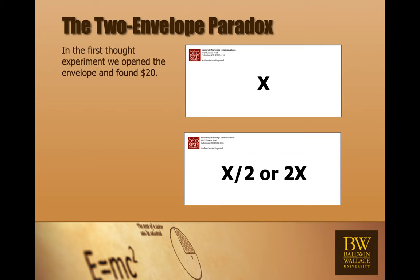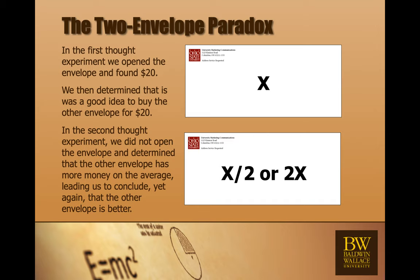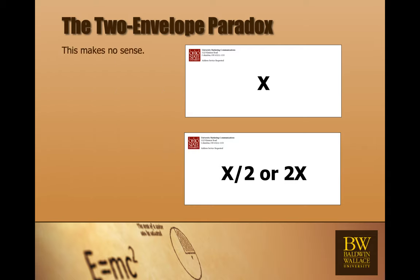In the first thought experiment, we opened up the envelope and found twenty dollars. And then we said it's a good deal to trade because the other envelope has, on the average, 1.25x. And we could do the same thing without opening the envelope. The other envelope is better. This is the paradox.